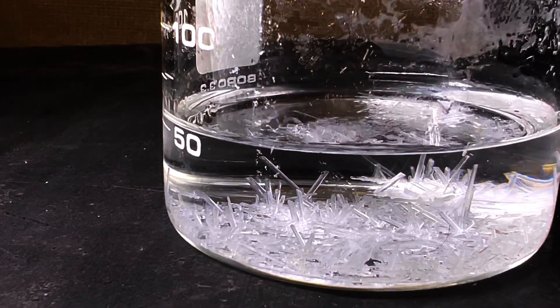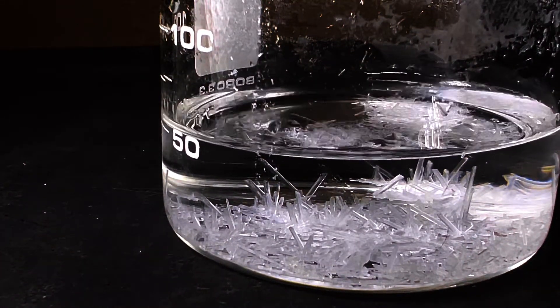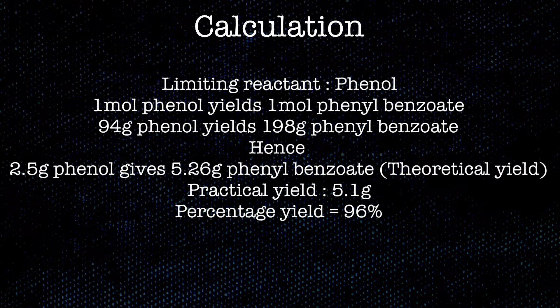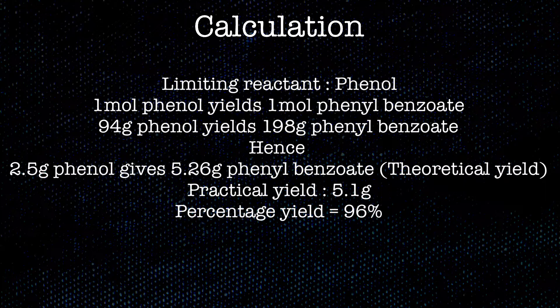The final yield was 5.1 grams. Now moving on to the calculation of the yield: phenol is the limiting reactant in this synthesis, so one mole of phenol should theoretically give one mole of phenyl benzoate. That is, 94.11 grams of phenol should give 198.22 grams of phenyl benzoate.